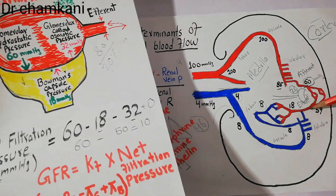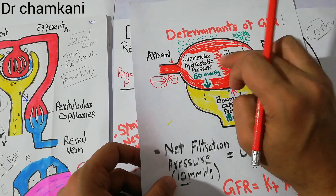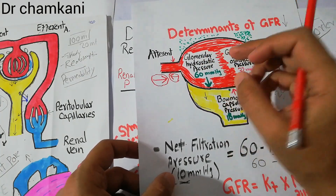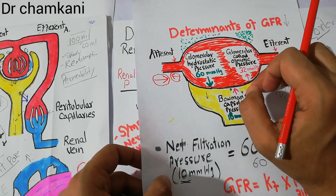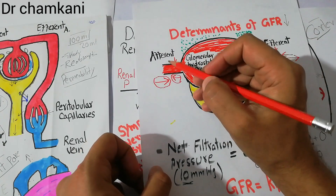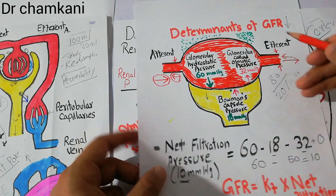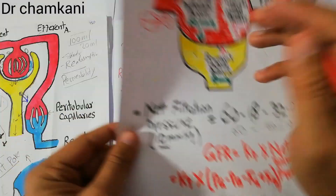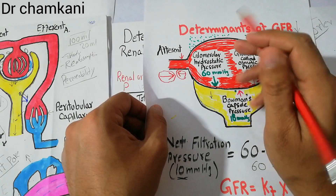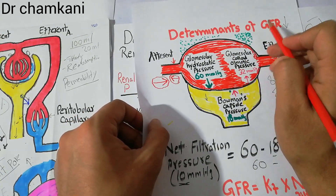This is the afferent arteriole and this is the efferent arteriole, here is the whole kidney. When blood is entering the glomerular capillaries, some pressures are forcing or helping the filtration process and some pressures are opposing it. If resistance due to constriction of the afferent arteriole or the efferent arteriole is increased — either due to the sympathetic nervous system, norepinephrine, or epinephrine — the blood flow to the glomerular capillaries will decrease and the GFR will decrease.